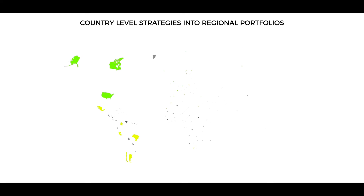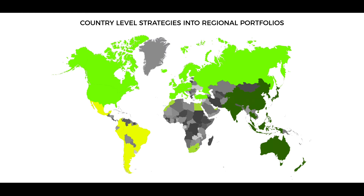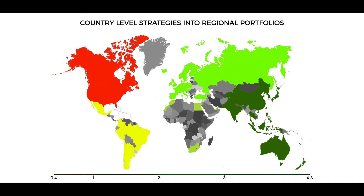By combining our country-level strategies into regional portfolios, we take advantage of the added diversification to achieve information ratios of three or higher in three out of five regions, including North America, Europe, and Asia-Pacific.